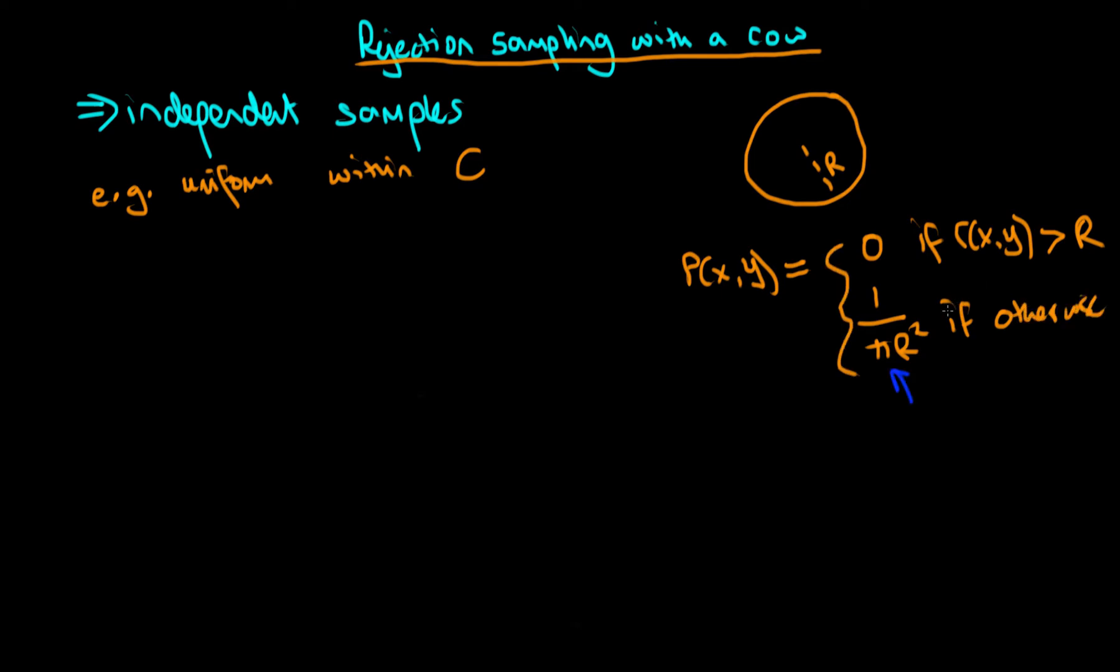The reason we've got this particular constant here is such that the area of the circle is pi r squared, and hence this means that we're dealing with a valid probability density.